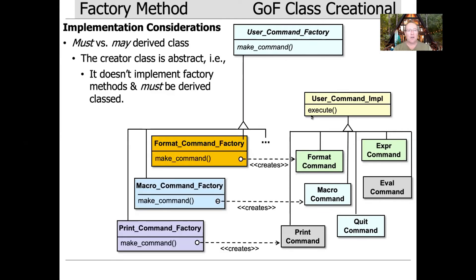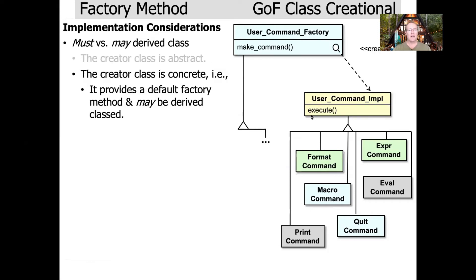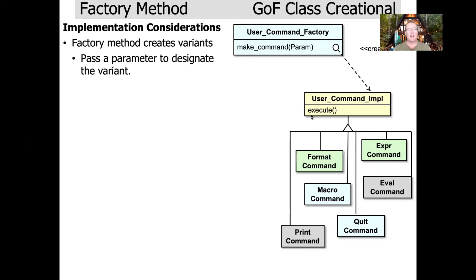One of the implementation considerations is must versus may. If you read the Gang of Four book, there's an explicit implementation consideration dealing with whether you must derive or may derive. If you make the creator class abstract, then it must be derived. But you can also make the creator class concrete, and then it can define a default factory method which may handle the bulk of the cases, and may be derived if you need to add something else later.